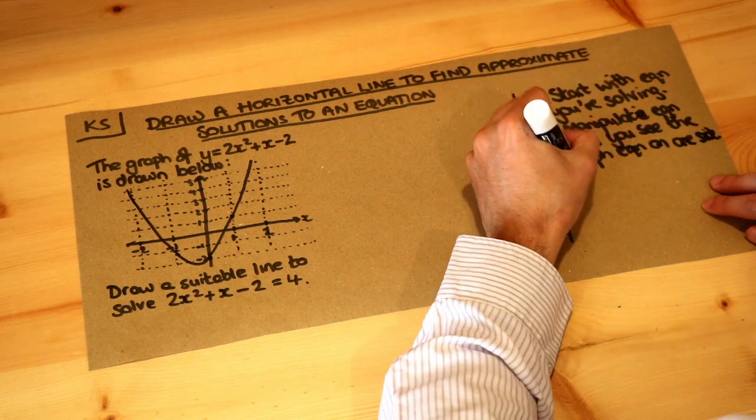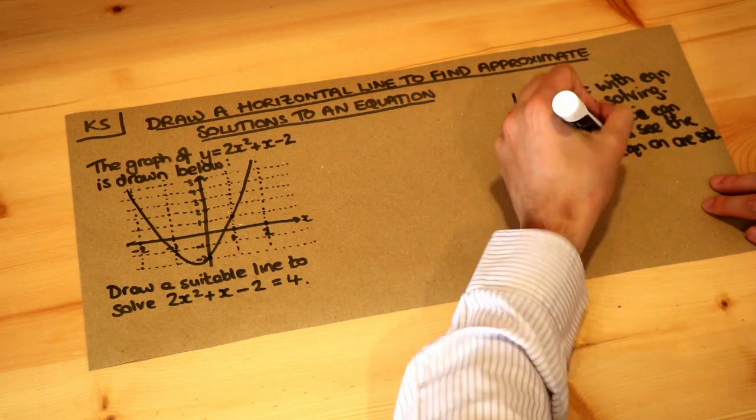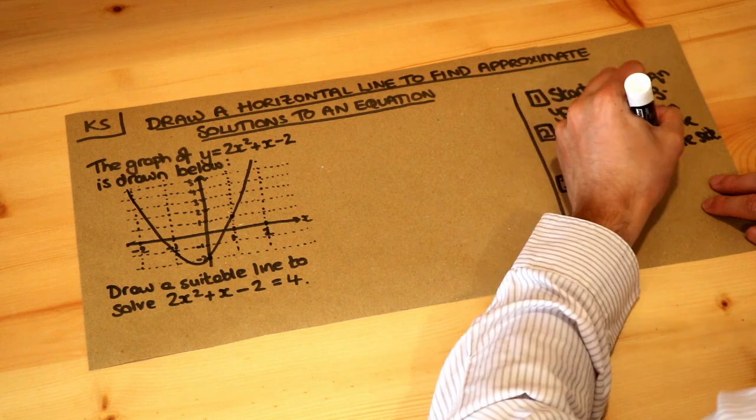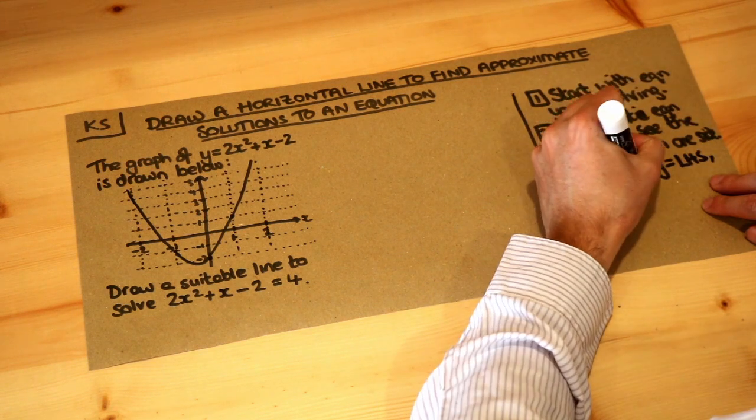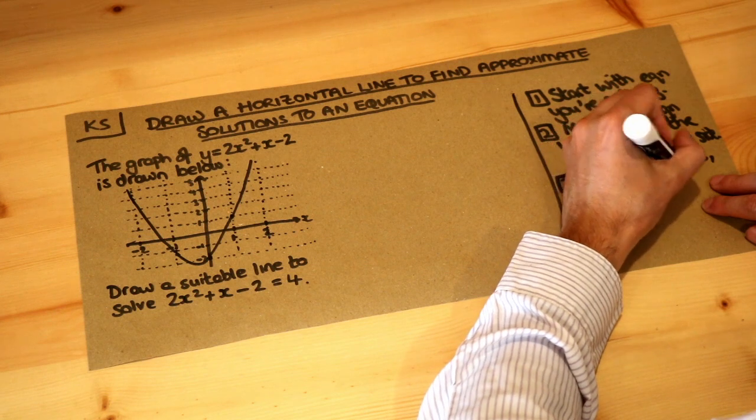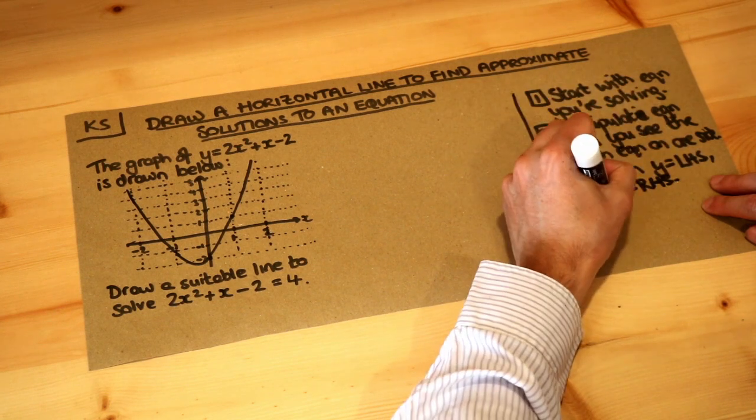I'll explain that in a second. Then you sketch each side of the equation. So you sketch y equals the left hand side and y equals the right hand side of your equation, and then you read off the points of intersection.